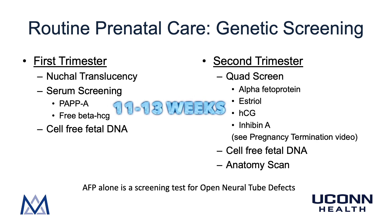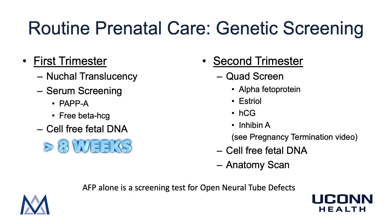Around the same time, maternal serum can be drawn for two hormones used as screening: PAPP-A, or pregnancy-associated plasma protein A, and free beta-HCG. Patients can also have cell-free fetal DNA screening performed as early as eight weeks. Cell-free fetal DNA has the benefits of being more sensitive, being offered earlier in pregnancy, and it can detect the presence of a Y chromosome so patients can find out the sex of the fetus. It is important to keep in mind that cell-free fetal DNA is not 100% sensitive or specific, and therefore is still a screening test.